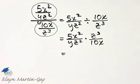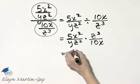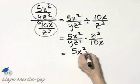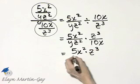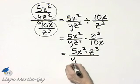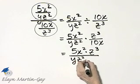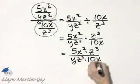And how do we multiply? Numerator times numerator, so 5x squared times z cubed over denominator yz squared times denominator.